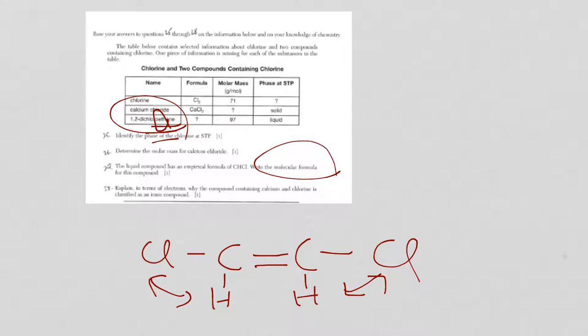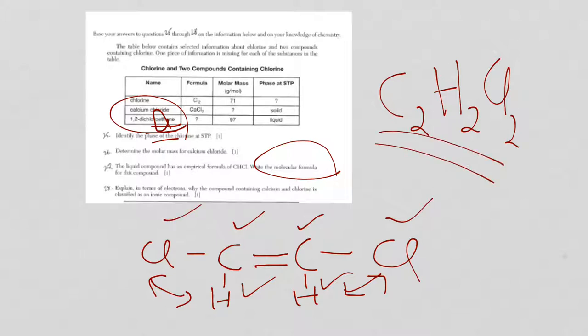So, if we do it in order of the empirical formula, I have carbon, but I have one, two of them. I have hydrogen and I have one, two of them. And chlorine, I have one, two of them. And there it is once again. So, there were two ways actually to answer question 27.